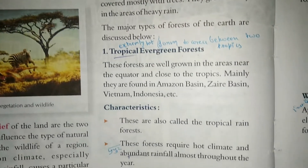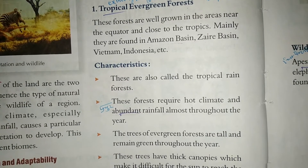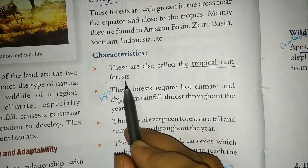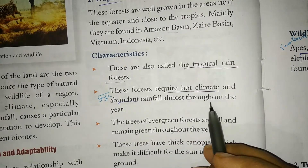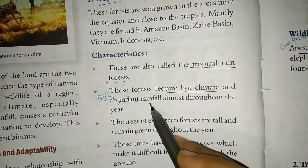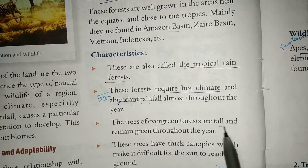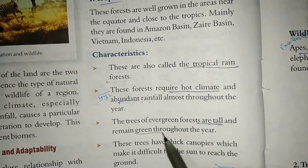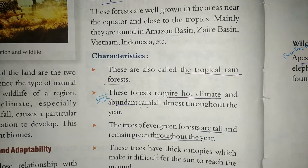What are the characteristics of tropical evergreen forests? These are also called tropical rainforests. They require a hot climate with heavy rainfall throughout the year. The trees of evergreen forests are tall, remain green throughout the year, and live the whole year.